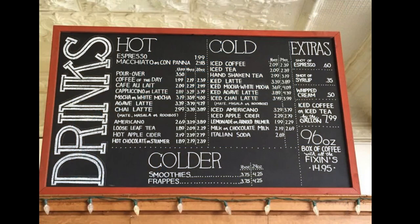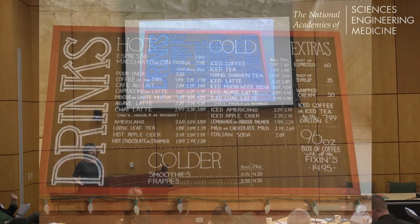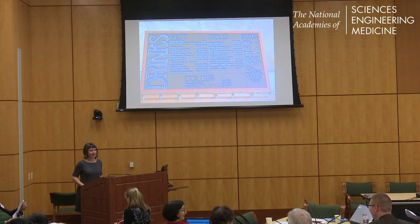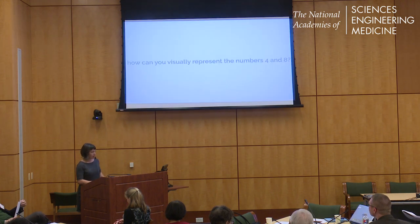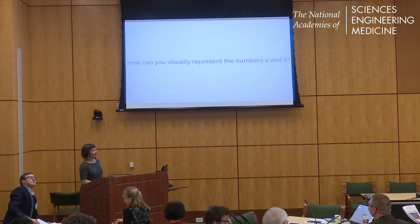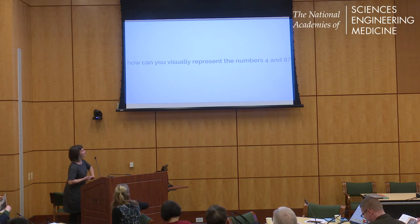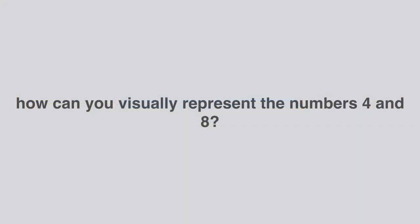Now that we have a little bit of language to talk about how we think about data and how we represent it, how might you visually represent the numbers 4 and 8? And no looking at the poster that Cady passed out. Let's just assume we're working with whole numbers to keep this simple. Any ideas?